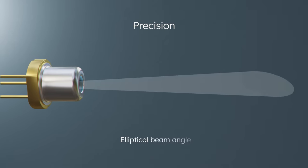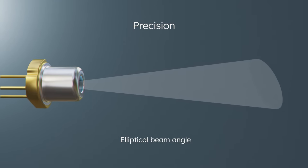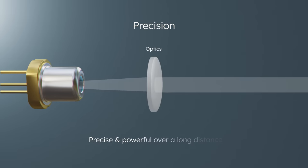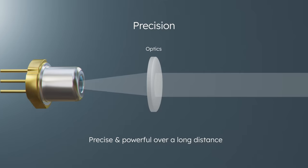The beam angle of the laser diode is narrow, its emission point as low as a few micrometers in diameter. Combined with optics, the light is precise and powerful even over a long distance.